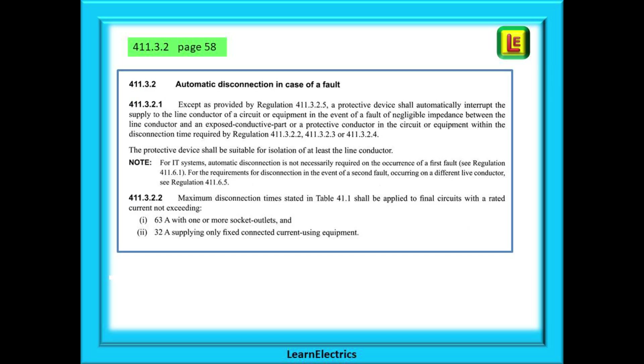A very important regulation is 411.3.2.2, and this is the key regulation on which a lot of Chapter 41 depends. 411.3.2.2 tells us that certain maximum disconnection times can be found in Table 41.1 on the next page and that the table applies to final circuits only with a rating not exceeding 63 amps for circuits with a socket, or 32 amps for circuits supplying only fixed electrical equipment. You absolutely must remember where to find this regulation.